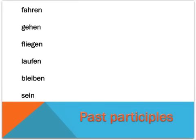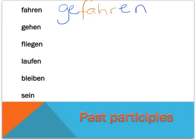Let's look at some common verbs that take Sein rather than Haben. The vast majority of them are verbs of motion, but not all — it's not a hard and fast rule, but it's a good guide. So, fahren: we have our GE, our regular stem in this case — fahr — and our EN. That's our past participle, gefahren. Gehen, as we met on the last slide, has an irregular stem. We still have our GE and our EN, but in the middle we have our irregular stem: gang, rather than geh.